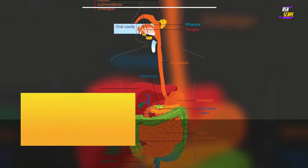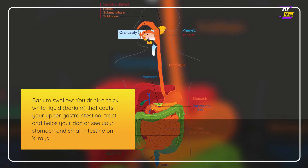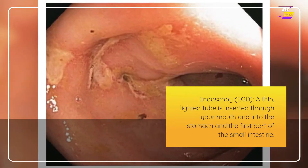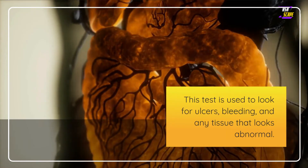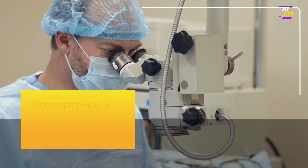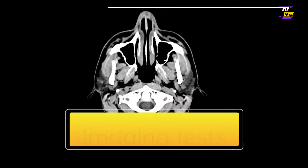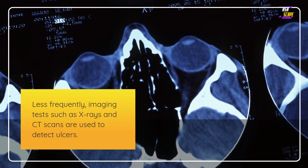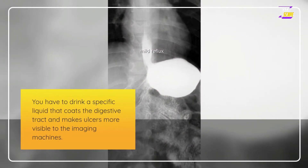Other tests used to diagnose stomach ulcers include a barium swallow, where you drink a thick white liquid that coats your upper gastrointestinal tract and helps your doctor see your stomach and small intestine on X-rays. An endoscopy (EGD) involves a thin lighted tube inserted through your mouth into the stomach and the first part of the small intestine to look for ulcers, bleeding, and abnormal tissue. An endoscopic biopsy removes a piece of stomach tissue for lab analysis. Less frequently, imaging tests such as X-rays and CT scans are used, requiring a specific liquid coating to make ulcers visible.